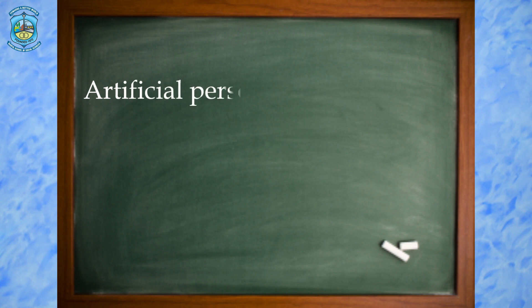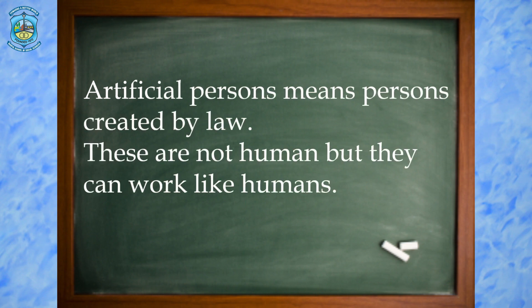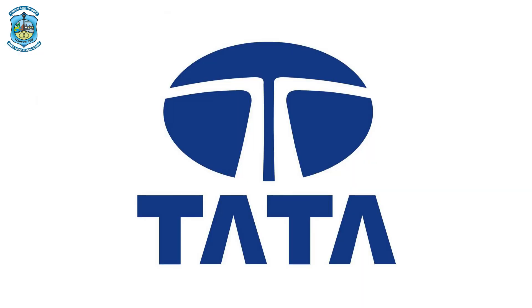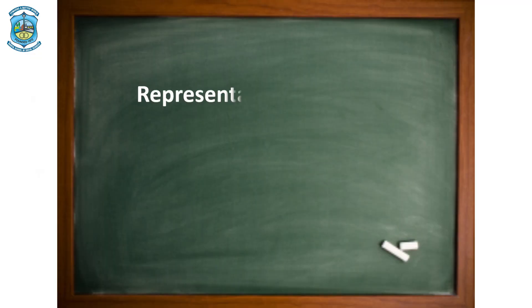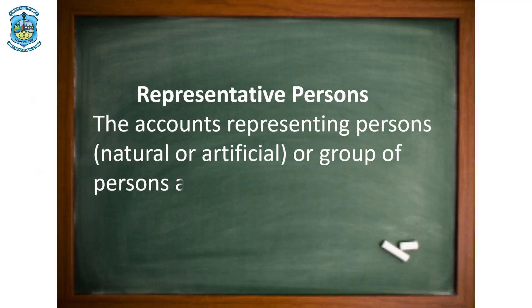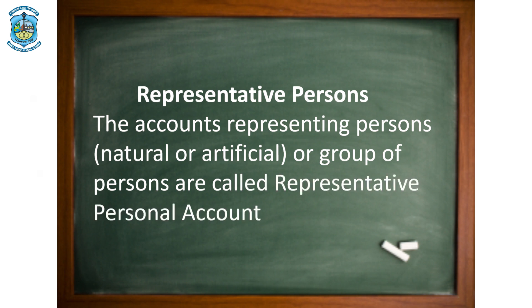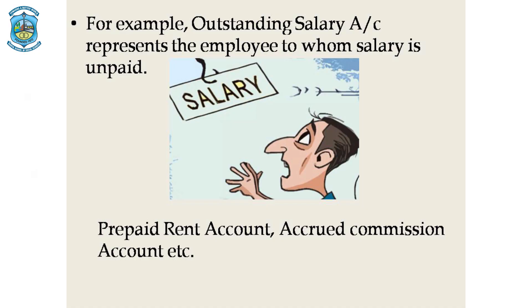We come to the artificial person. Artificial persons are not human beings; these are created by law. Artificial persons can include various companies like banks, Tata, BHEL or Amazon. Now comes representative person. Representative persons are the accounts which represent a person or a group of persons. These are naturally the nominal accounts which become outstanding or accrued, and then we call them representative personal accounts. For example, salary outstanding to an employee is the amount unpaid to an employee; therefore, the salary outstanding represents the employee to whom the salary has been unpaid. Other accounts can be prepaid rent account, accrued commission account, etc.